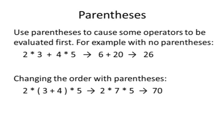For example, with no parentheses, 2 times 3 plus 4 times 5 becomes 6 plus 20, and the result is 26.